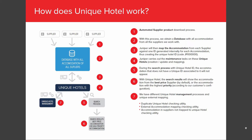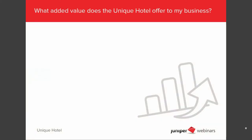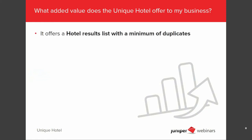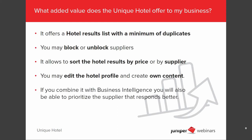It's important to know how it works, but the most important thing is what added value does the unique hotel offer to my business. This stage is the most important because you are going to see the unique hotel functionalities. The five main positive points are: it offers a hotel result list without duplicates; you may block or unblock suppliers; it allows sorting the hotel result by price or by supplier; you may edit the hotel profile and create own content; and if you combine it with business intelligence, you can prioritize the supplier that responds better.